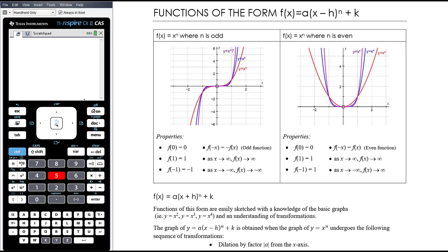In this section, we're going to be looking at polynomial graphs, but a particular subset of polynomial graphs — those that fall into this particular form: a times (x minus h) to the power n, plus k. In the case of a quadratic, we would call that turning point form.